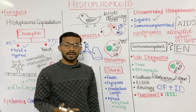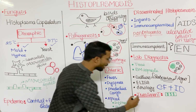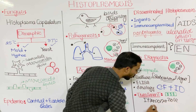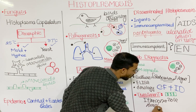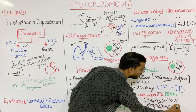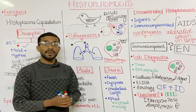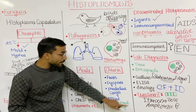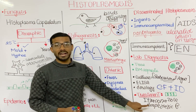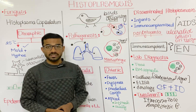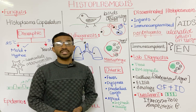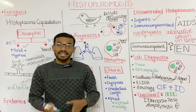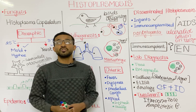For treatment, the drug of choice is itraconazole. Amphotericin B is also used, and if the patient has kidney damage, liposomal amphotericin B is prescribed instead. Fluconazole can be used in cases of meningitis. These drug choices may vary from patient to patient and by geographic location.